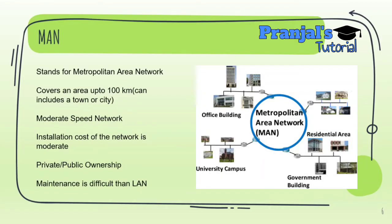MAN stands for Metropolitan Area Network. This network can cover an area up to 100 km — typically a city or town. It is a moderate-speed network. The installation cost is moderate — more than LAN. Ownership may be private or public, and the maintenance cost is less than WAN.